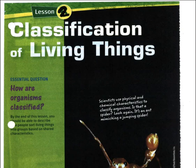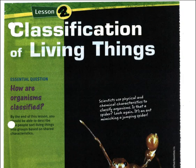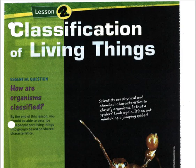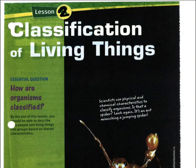Today we're going to talk about classification of living things. We've already discussed what living things are, the characteristics of them — that they're all made of cells, they respond to their environment, they reproduce, they get and use energy, they grow and develop and mature. Now we're going to take all those living things and sort them out to help us organize everything so we can better study how they're related.